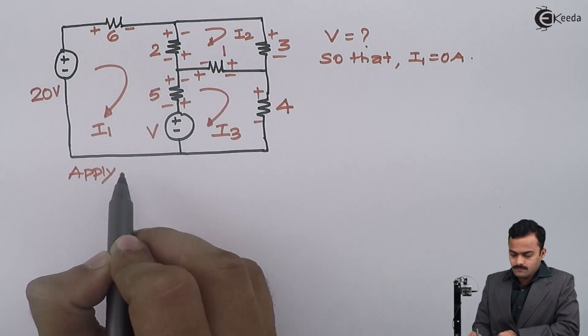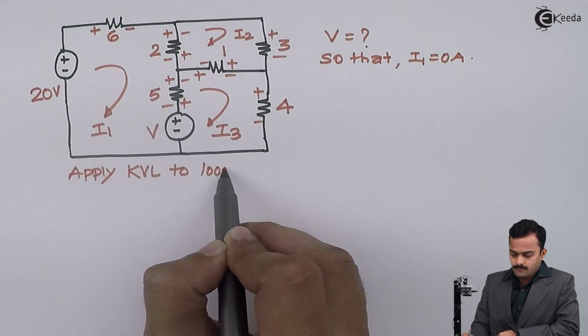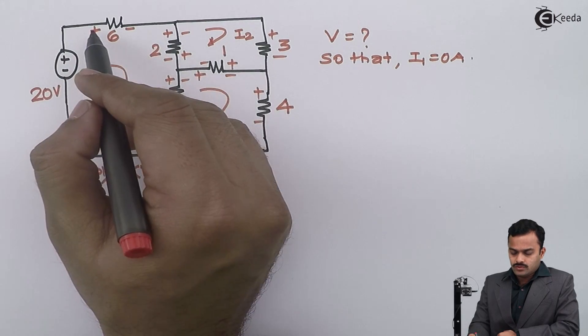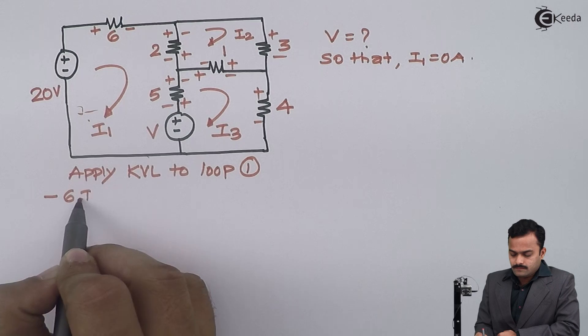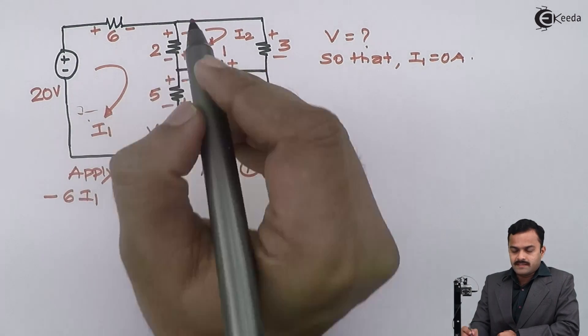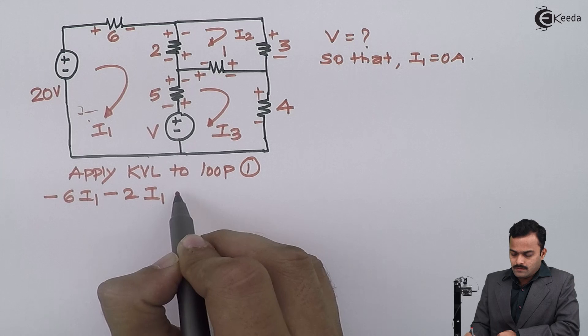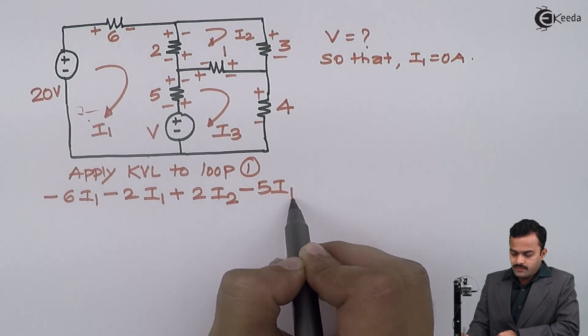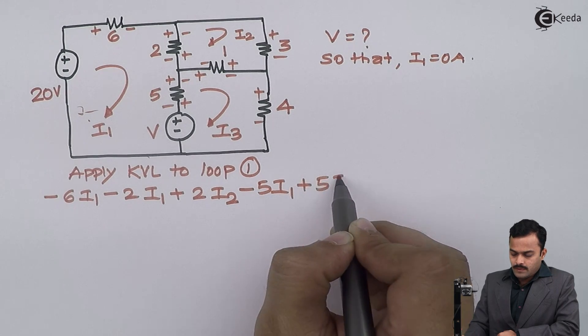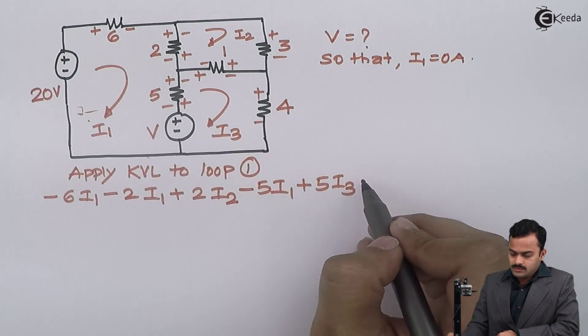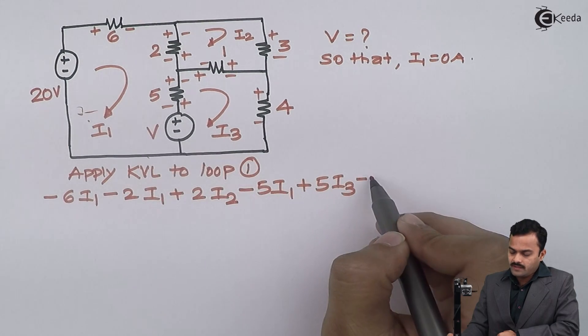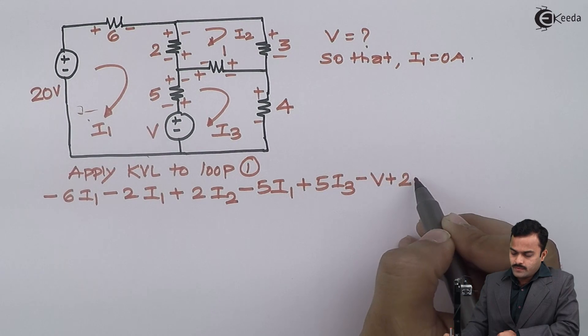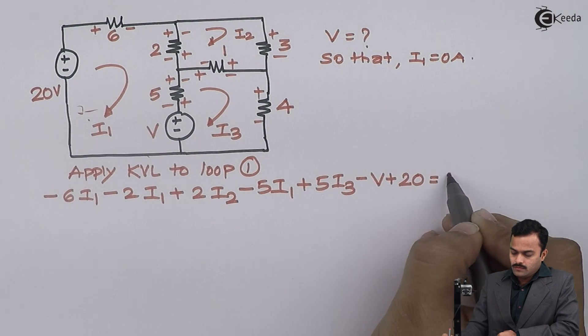To loop number 1, I will start from this point and come back to the same point. So plus minus, so it is minus 6I1, plus minus, so minus 2I1 plus 2I2, minus 5I1 plus 5I3. Plus minus, so it is a minus, but the value is not known, so I will write minus V, minus plus, plus 20 equals 0.